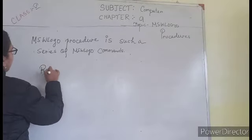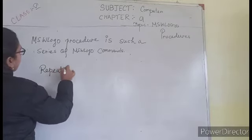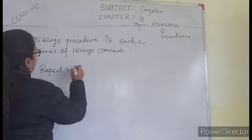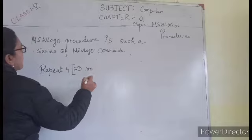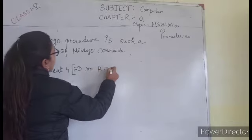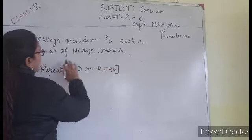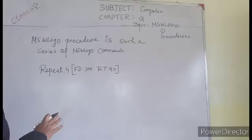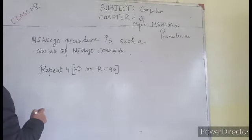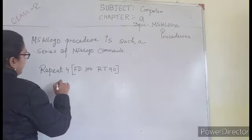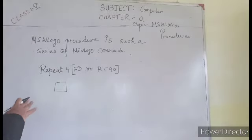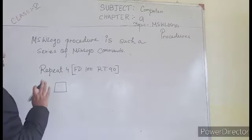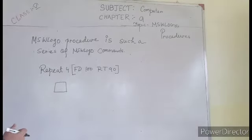You will write only repeat 4, suppose. Repeat 4, FD 100, RT 90. So suppose this is written in a common input box and in the drawing area, you will get the square there but for only one time. If this thing is erased from there, you cannot get it on the screen again.